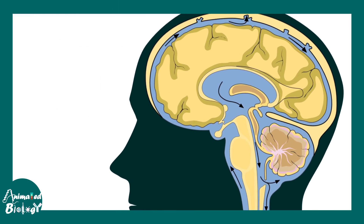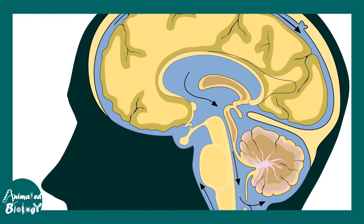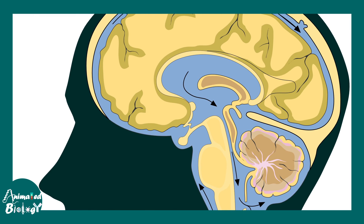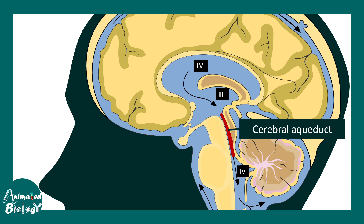Let us try to understand what the cerebral aqueduct is. These are the lateral ventricle, third and the fourth ventricle in the human brain. The connection between the third and the fourth ventricle is the cerebral aqueduct.